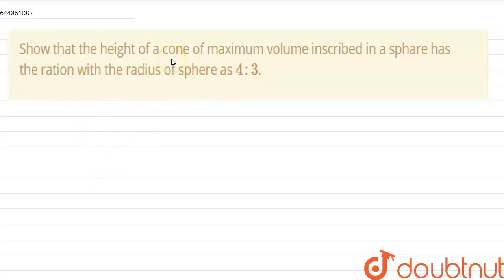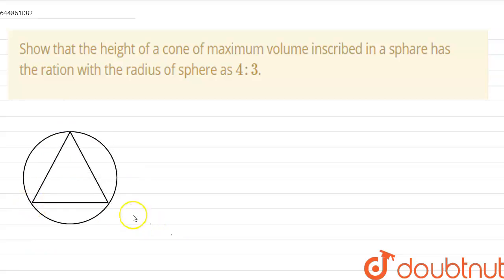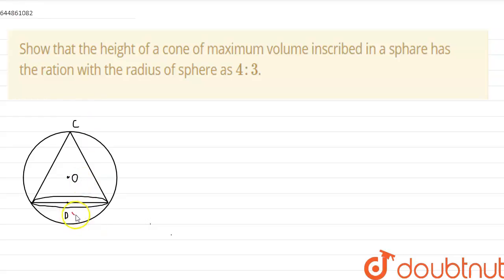So we have the cone inscribed inside a sphere. Firstly we can draw the figure. Let this be the sphere. In this we have a cone — this is our cone. We can now draw the base of the cone. So this is our cone inscribed inside a sphere. We can mark the center as O, this point as C, this as D, and we can denote the radius of the cone as r. The radius of the sphere can be denoted by R.